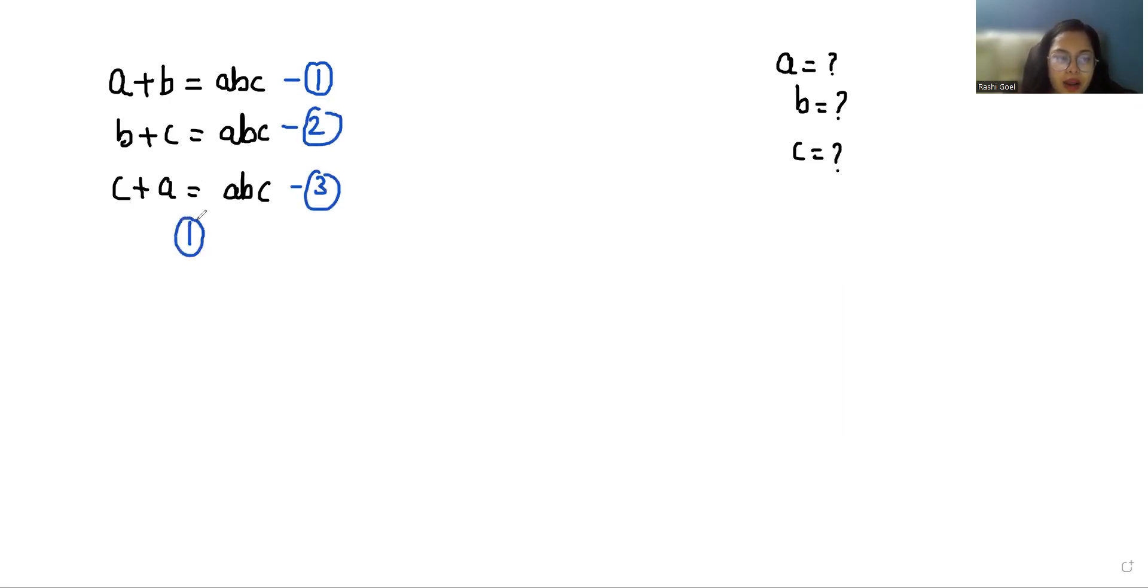In the first step I'm going to subtract equation number two from first. So a plus b minus b plus c equals abc minus abc. So a plus b minus b minus c equals zero. We can cancel out the b, so a minus c equals zero, or a equals c.